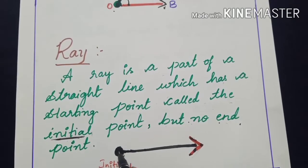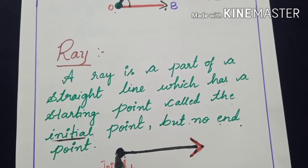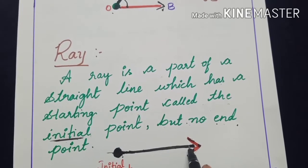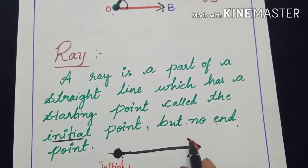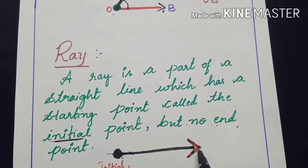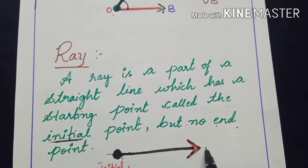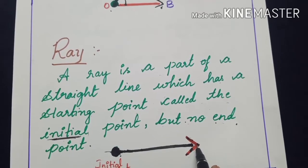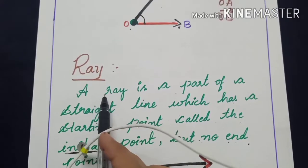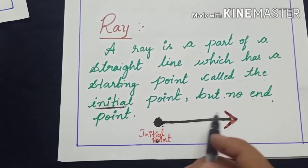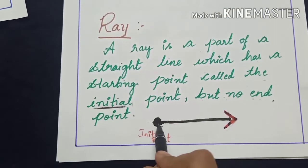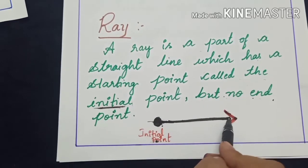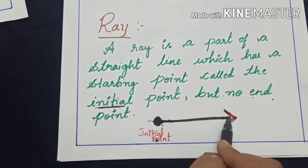One side there is an end — you cannot extend the line this side. But here you can extend this line as much as you want; there is no end point this side. So this is called a ray: a straight line which has one initial point and there is no end point for that.